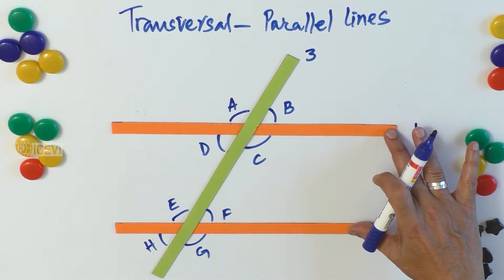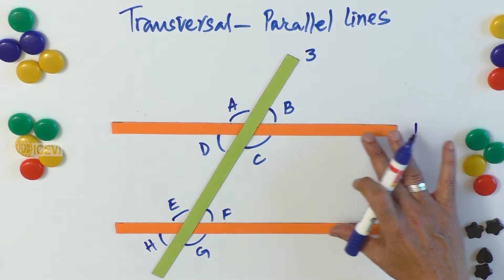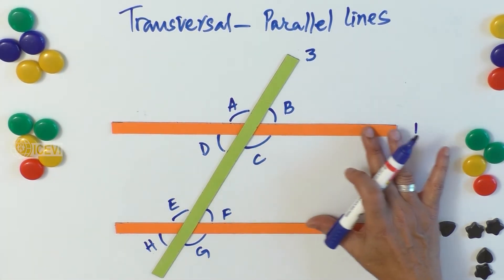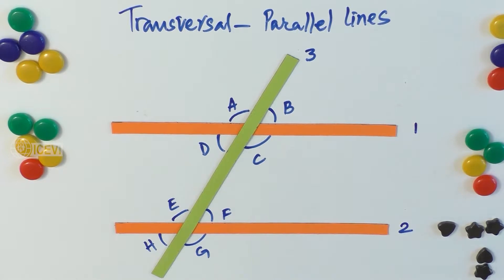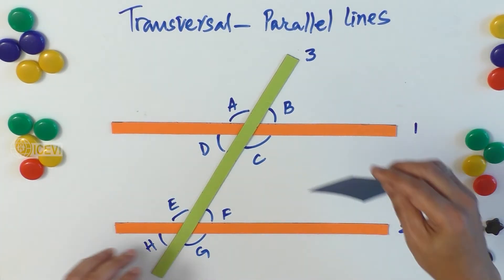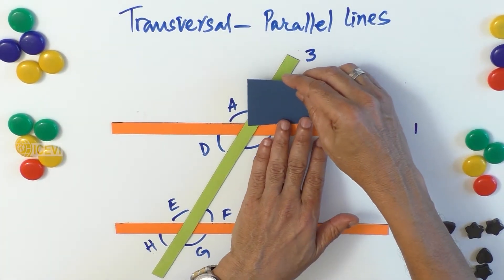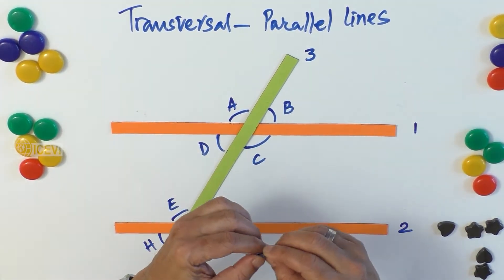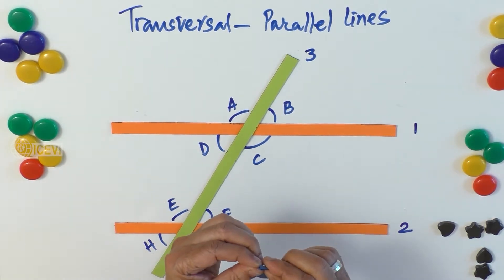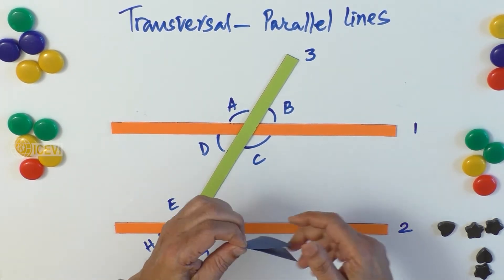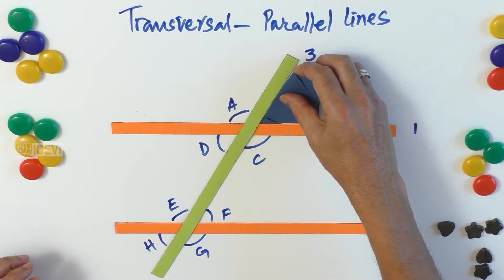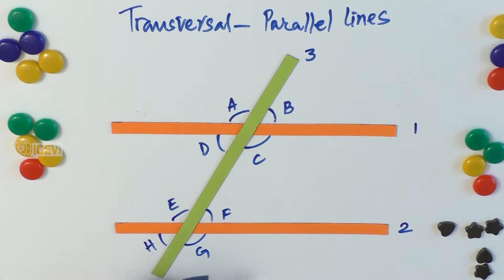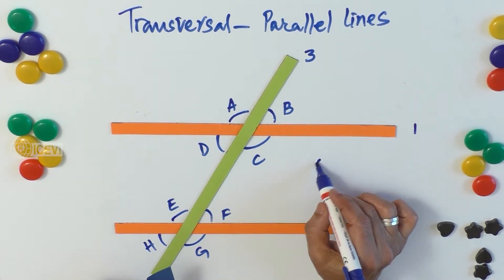When the two lines are not parallel, the corresponding angles are not equal. However, whether the lines are parallel or not, the vertically opposite angles are always equal. When the lines are parallel, the corresponding angles are equal. Now let us measure — take a sheet and measure angle B.